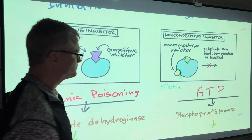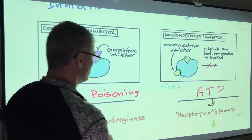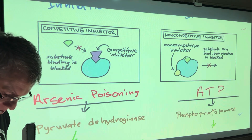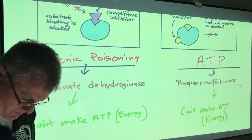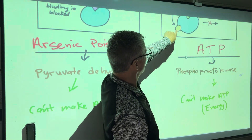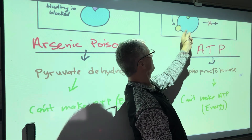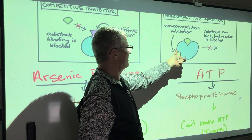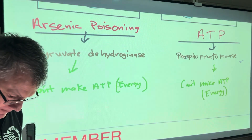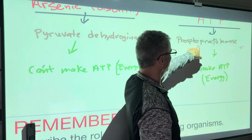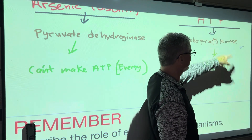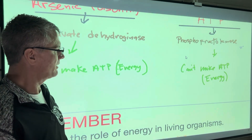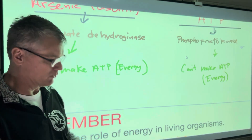ATP is the end product of our energy creation — that's the whole purpose of eating food. Sometimes if there's too much ATP, the ATP molecule itself will become a non-competitive inhibitor. It's non-competitive because it's not competing for the same active site, but it still has the same effect because it changes the shape of the enzyme. ATP fits into the allosteric site of phosphofructokinase, another enzyme that helps us make ATP, and slows ATP creation down until levels drop and binding stops.